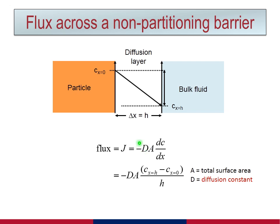Since we have defined the diffusion layer, we can expand this derivative dc/dx. At the top, dc is simply the concentration at the end of the diffusion layer at x equals h, minus the concentration at the beginning where x equals 0. The dx is simply the constant h.